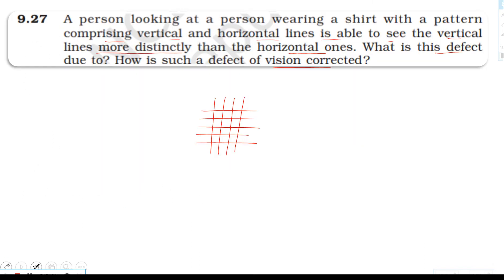In conclusion, astigmatism is caused by the cornea or eye lens having non-uniform curvature in different planes. This defect is corrected using a cylindrical lens.